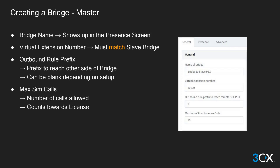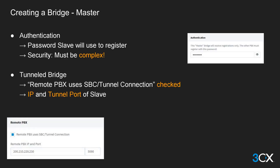You can limit the number of calls going through the bridge by defining the maximum number of calls. The number of calls placed through the bridge will count towards the licenses of both PBXs. The authentication of the bridge consists of the password that the slave will use to connect to the master. The bridge password can be changed, but keep it complex. If the 3CX tunnel protocol is going to be used, check the remote PBX users SBC tunnel connection option.